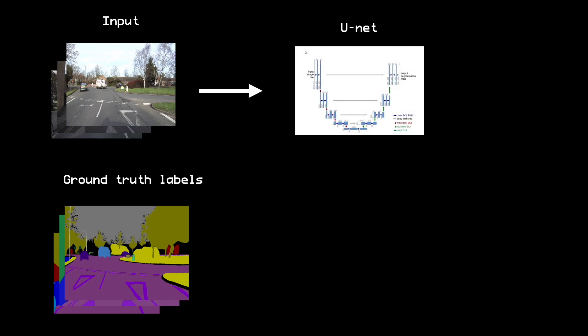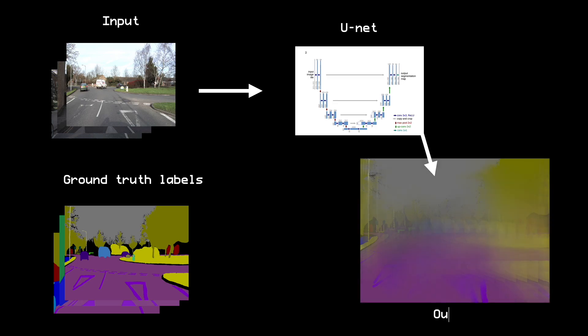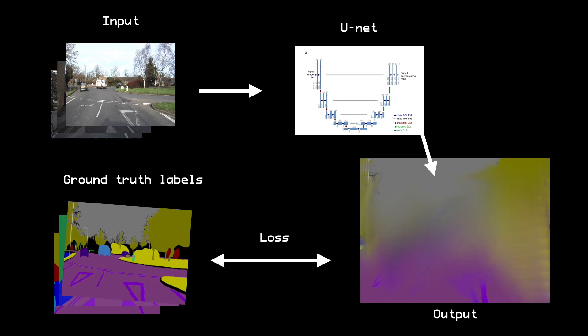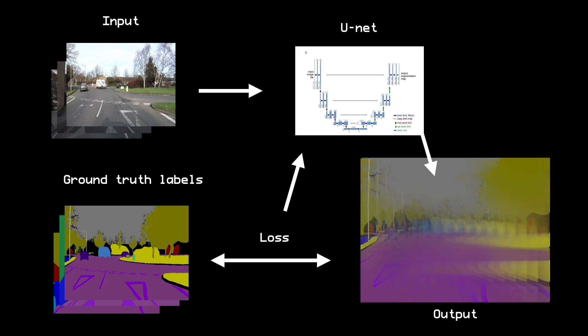For example, with a set of input images and hand-annotated segmentation masks, we can train a UNet model. By passing in our images to our model, we can produce an initial guess at the ground truth mask. Initially, our guess won't be very good. However, we can still use it to compare against our ground truth label. This comparison gives us an error we can use to adjust our model's parameters, meaning that the next time we pass in an image, we'll have a slightly better prediction.